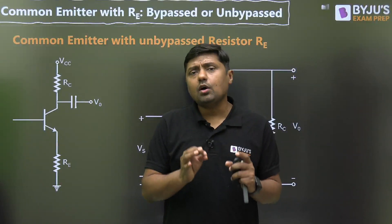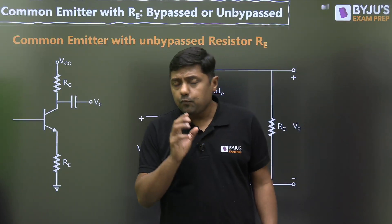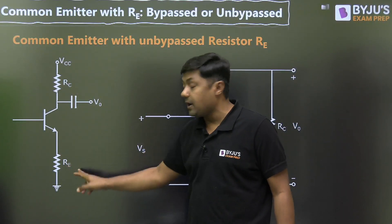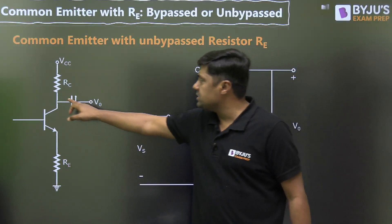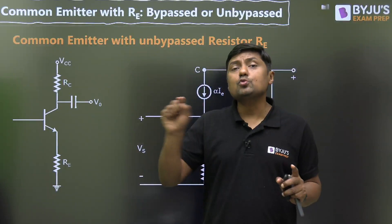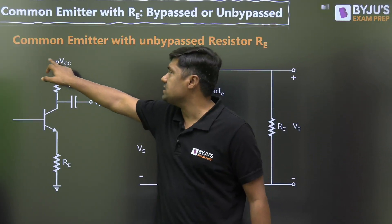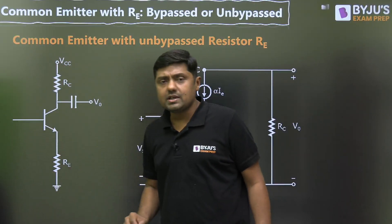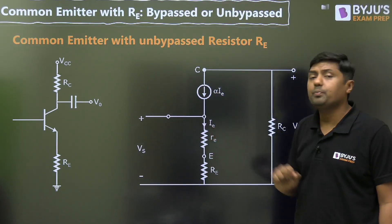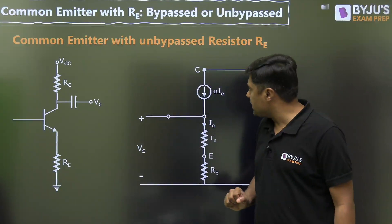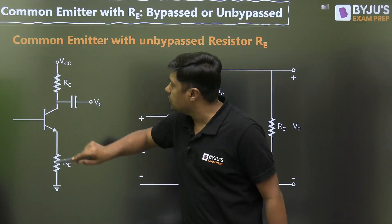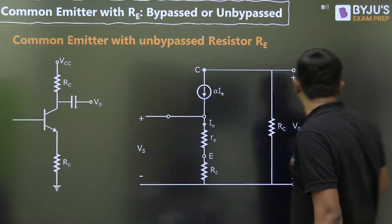For voltage gain V0/Vs with unbypassed RE, watch this diagram. RC is connected here, VCC is connected here, the capacitor acts as short circuit during AC analysis. All DC sources tend to zero, so VCC becomes zero and that point is connected to ground. We are giving input Vs at the base. In the small signal model, we have alpha·IE, with RE at the emitter terminal and RC connected from collector to ground.